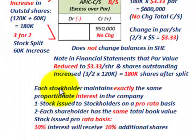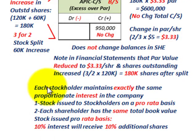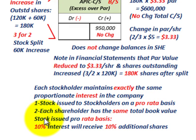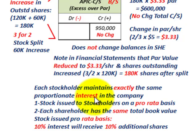When doing stock dividends and stock splits, they're done on a pro-rated basis. Each stockholder maintains exactly the same proportionate interest in the company after any stock dividend or stock split. The stock is issued to stockholders on a pro-rated basis, and each shareholder has the same total book value after the stock dividend and stock splits. For example, if you own a 10% interest in a company, you will receive 10% of the additional shares, maintaining the same equity ownership after the stock dividend or split as before.